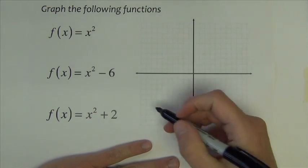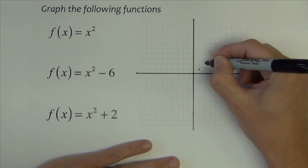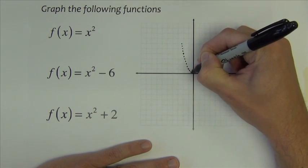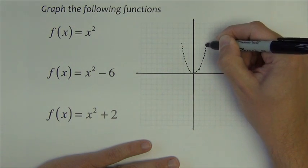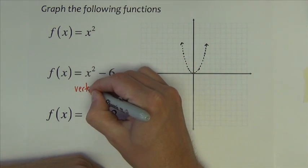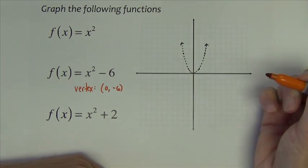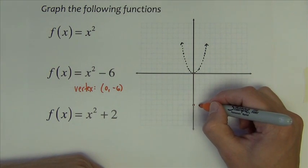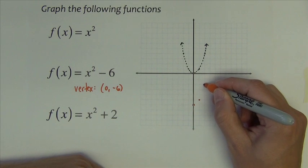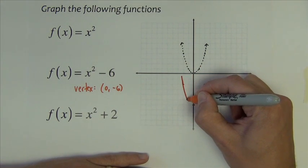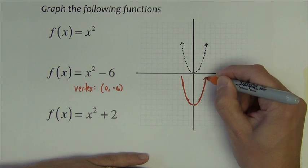Next set of problems, I'm going to again begin with my parent function, x squared. So 1 to 1, 2 to 4, on both sides. Now the first one we're going to do to compare is x² - 6. This changes the vertex to (0, -6), so it's going to move down 6 units to right here. That's the point we begin from. 1 squares to 1, 2 squares to 4, on both sides. So the graph looks like that.